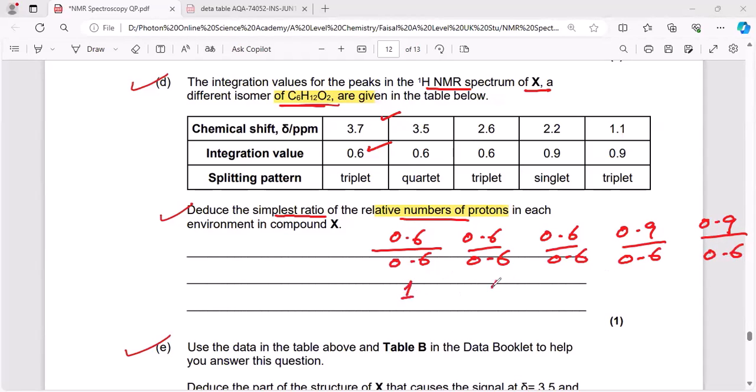here you will be getting 1, here you will be getting 1, 1 and here you will be getting 3 upon 2, here you will be getting 3 upon 2. Now you need simplest whole number ratio. So multiply this with 2 to cancel out this 2.